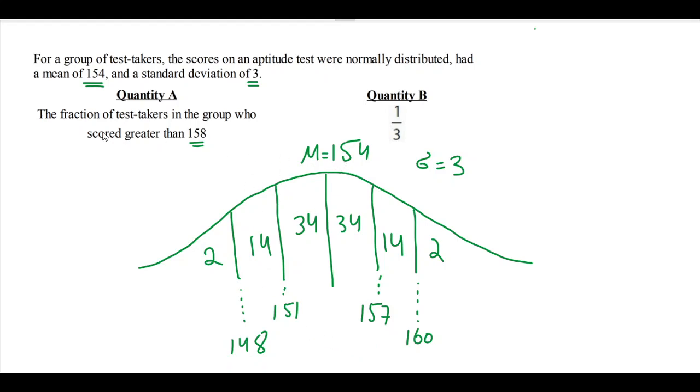I think now that we are basically done with our basic configuration, we are in a good position to solve quantity A and compare it with B. So the fraction of the test takers in the group who scored greater than 158.